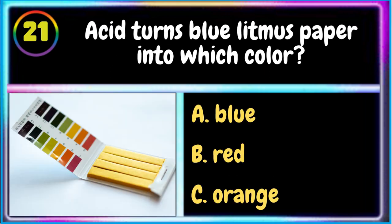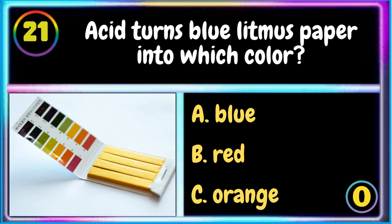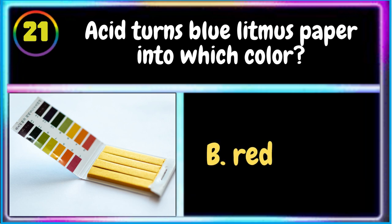21. Acid turns blue litmus paper into which color? A. Blue B. Red C. Orange. The correct answer is B. Red.